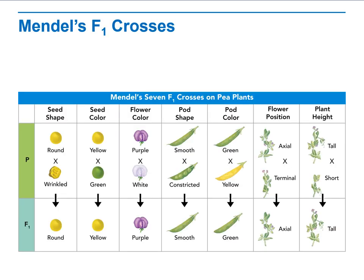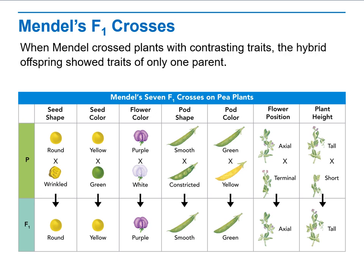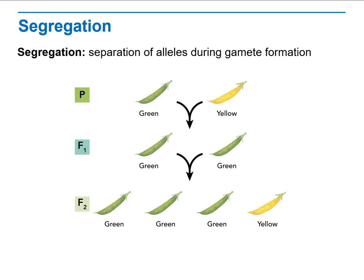In Mendel's first generation crosses, even when two dominant traits were present, he found that recessive traits appeared in the second generation. This is due to segregation — the separation of alleles during gamete formation. In the second generation, yellow traits that were absent in the first generation reappeared.